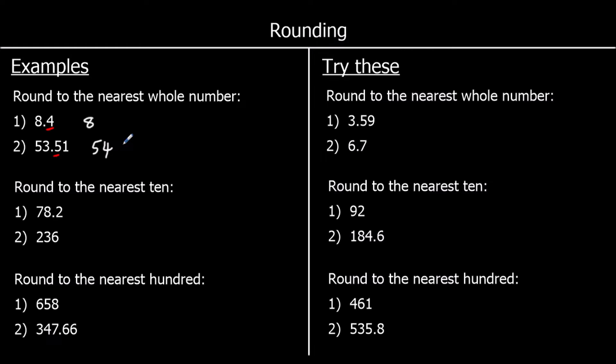The next question: we're looking at the tens column. Again, we look at the next column down, which is the ones. Is it 5 or above? If it is, round up to the next 10. If it isn't, leave it as it is. So this is 5 or above, so we're going to round up. 10 above 70 is 80, so it's closer to 80 than it is to 70.